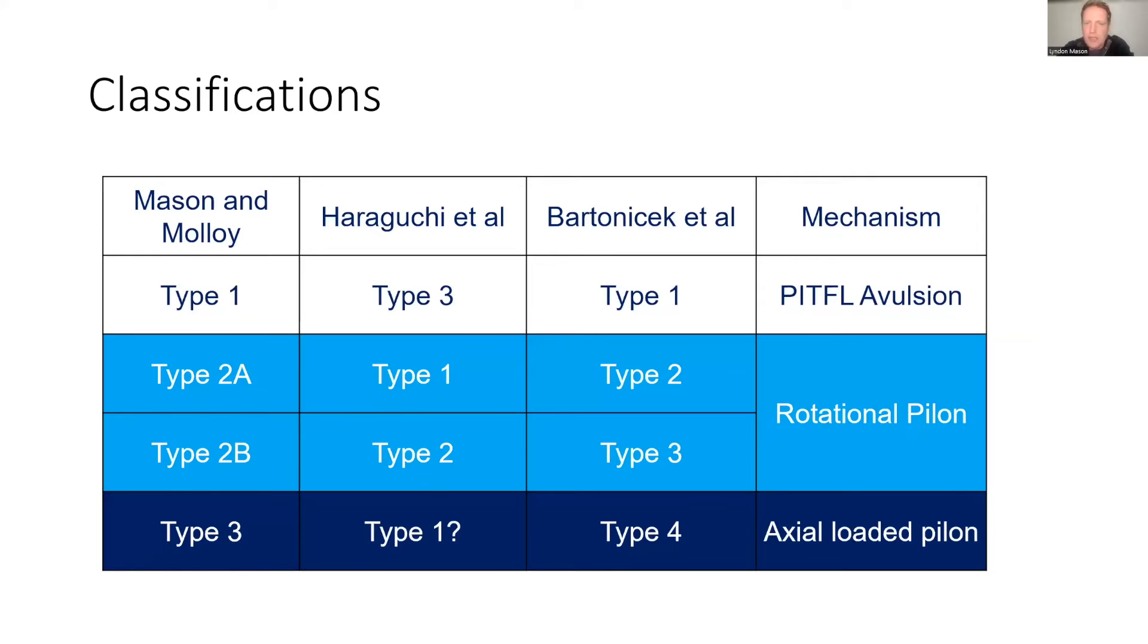Bartonicek and Rammelt literally came up with the same classification, but their Type 2 and Type 3 was our 2A and 2B. The Haraguchi either didn't include the Type 3, or a lot of papers are now calling it the little Type 1 or your big Type 1. It's quite obvious within the papers that they didn't include them or grouped them all together with different injuries.